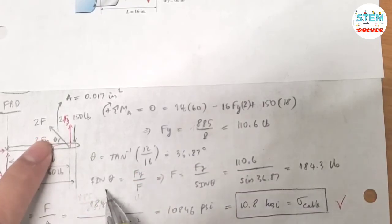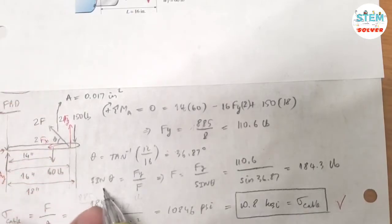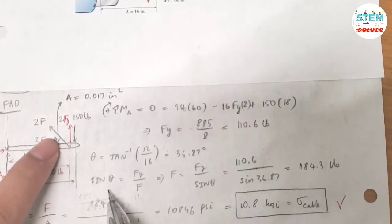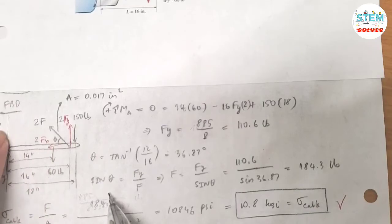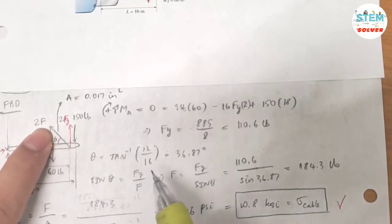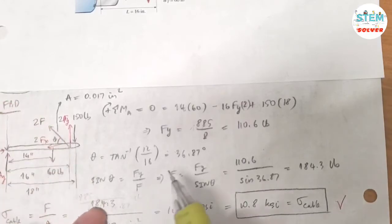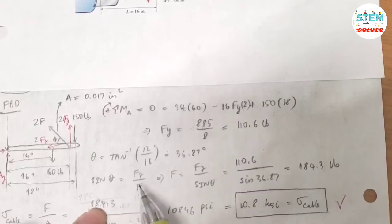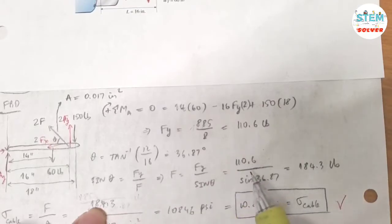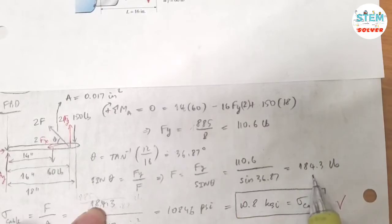Now let's use sin(theta). Since sin equals opposite over hypotenuse, where Fy is the vertical component and F is the total cable force, we have F equals Fy divided by sin(theta). Plugging in the values, F equals 184.3 pounds.